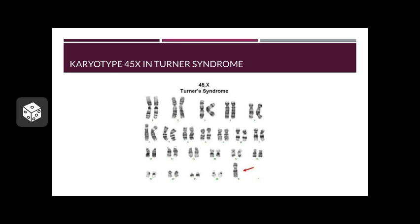This figure is an example of a karyotype 45X that is usually seen in Turner Syndrome. As you can see at the bottom of the figure, there's one pair of chromosomes with an X marked by a red arrow pointing towards it — that X is actually missing its X pair, which is commonly seen in patients who have Turner Syndrome.